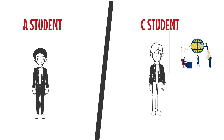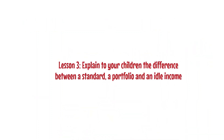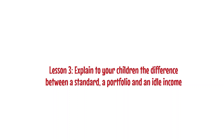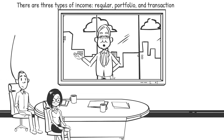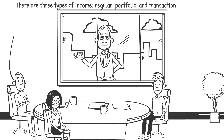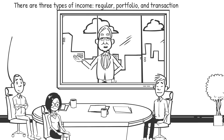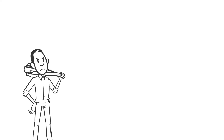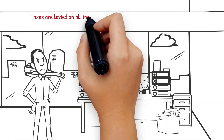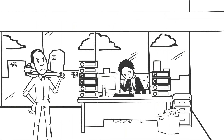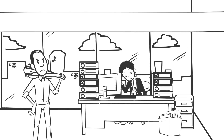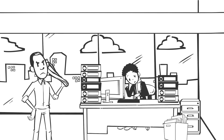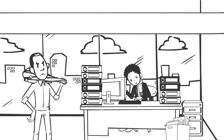Lesson three: explain to your children the difference between standard income, portfolio income, and passive income. There are three types of income: regular, portfolio, and passive. Students are often taught only how to work to earn a living through regular steady paychecks. Taxes are levied on all income, even savings accounts and 401(k) schemes — another reason why you should educate your children about taxes. Everyone has a lot to learn about this, so the sooner they start to understand it the better.